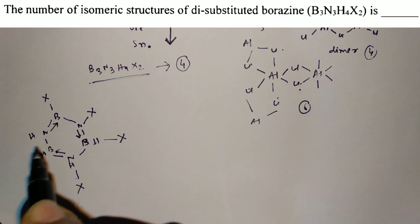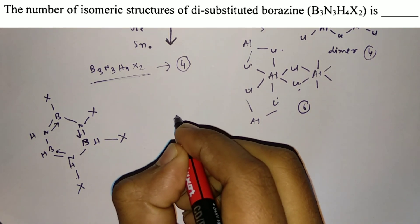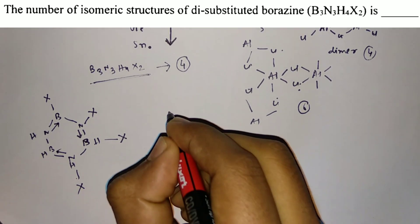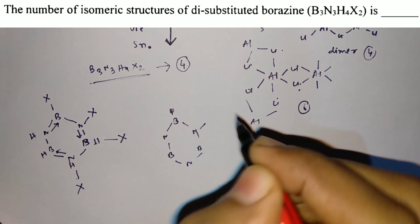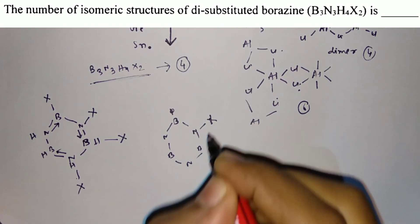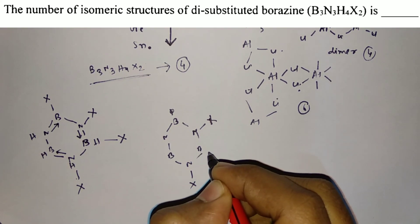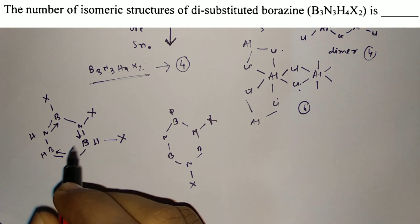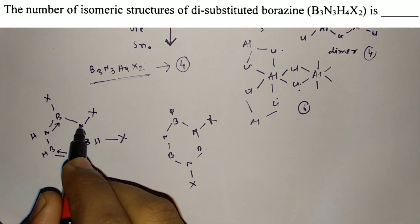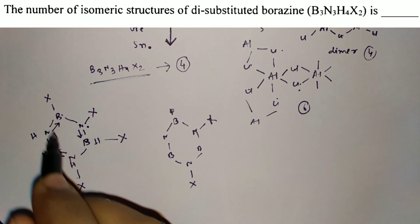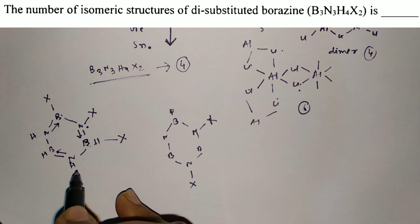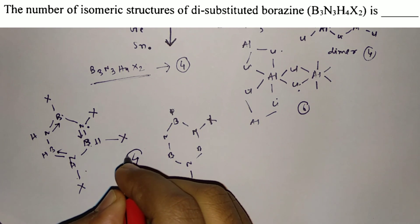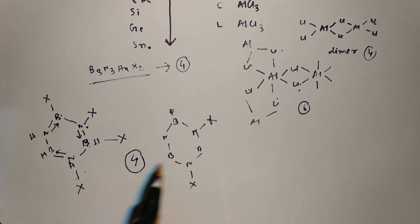For two X atoms on two consecutive boron atoms, then on alternating boron atoms, and then on boron atoms in another arrangement — three isomers from boron positions — and another isomer when X is on the nitrogen atoms. So there are four isomeric structures in total.